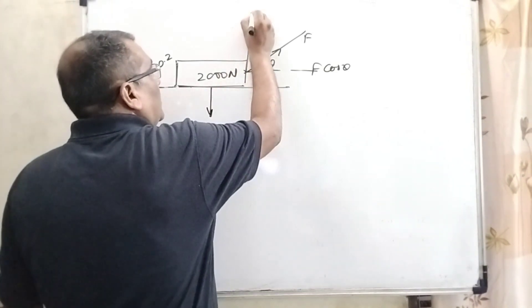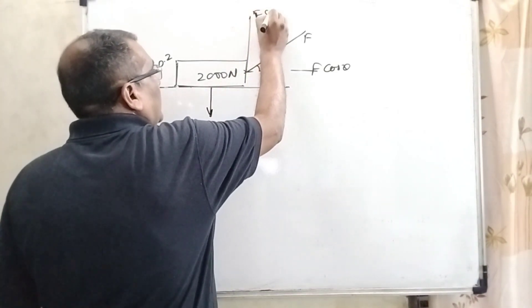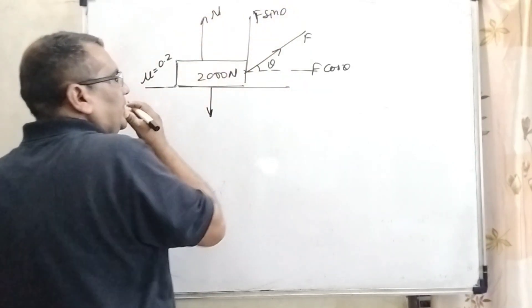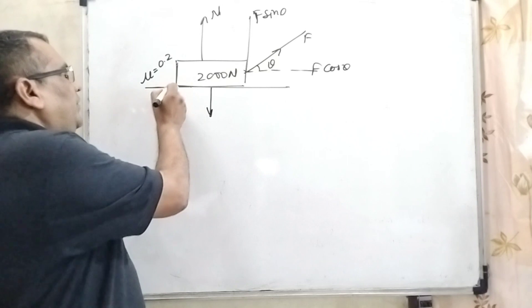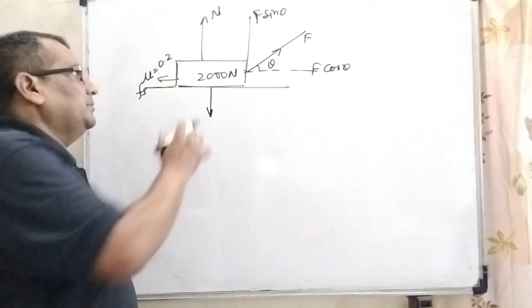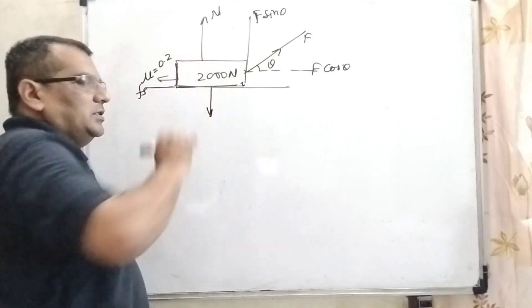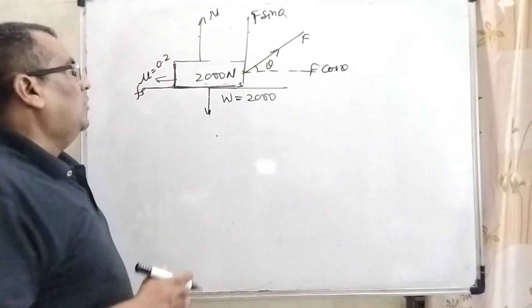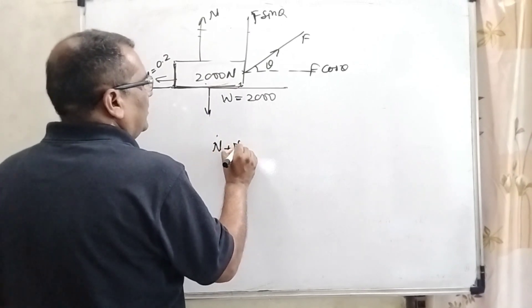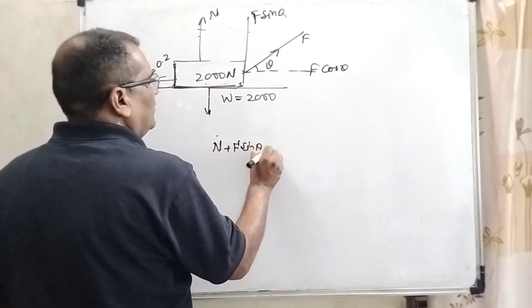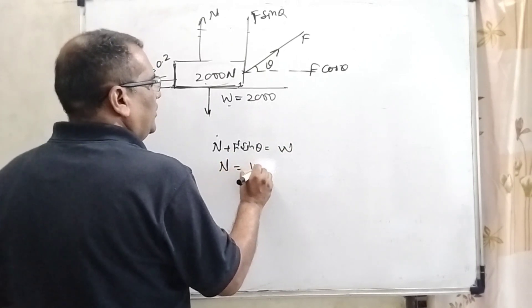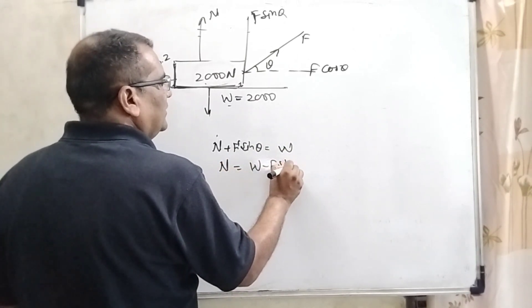Its vertical component is F sin theta. Normal force is also acting in the upward direction. So we have written all these forces on this box. Now we see that the upward force N plus F sin theta is equal to W.